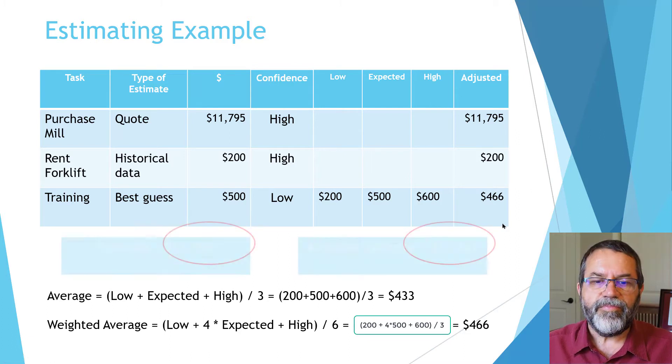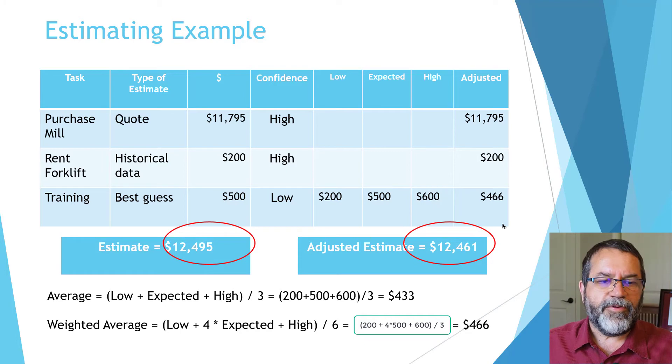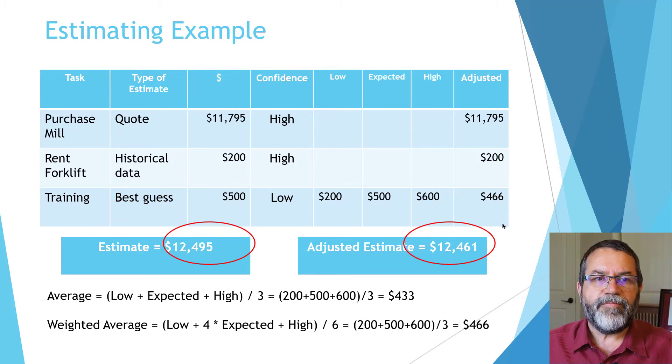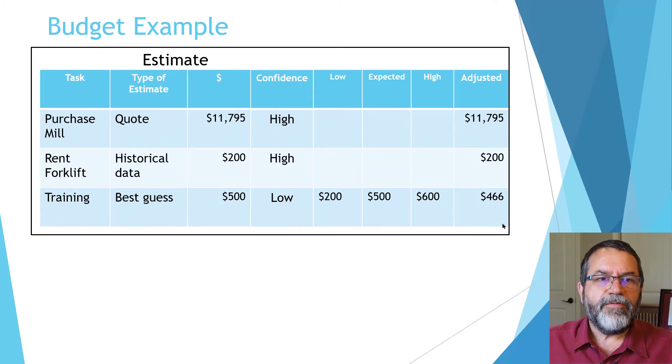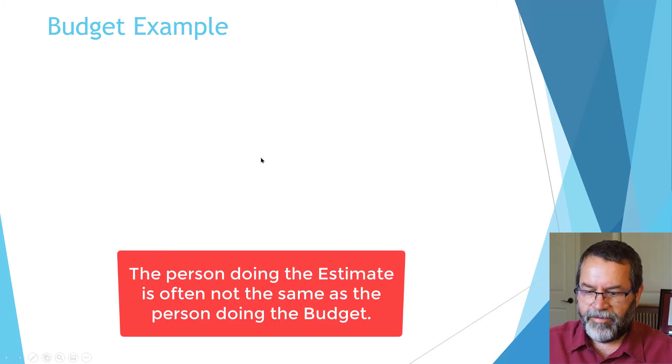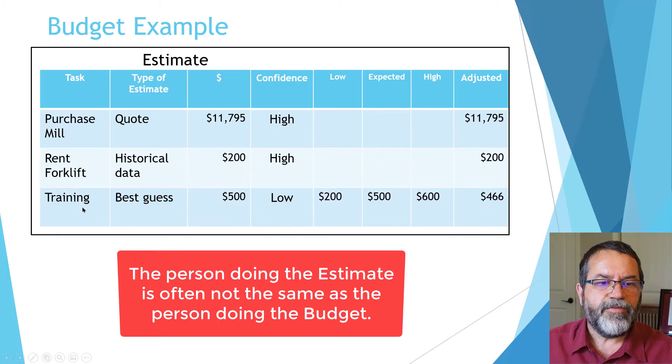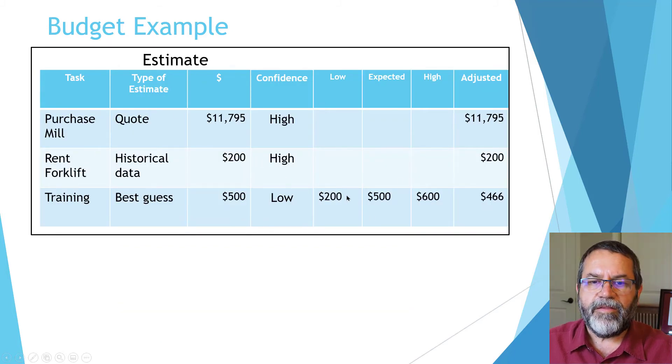Let's look at what that did for me. I started out with an estimate of $12,495. I made some adjustments and came up with $12,461. Those numbers are not very different, but that's my homework—I've done my estimating. Now let's look at budgeting.